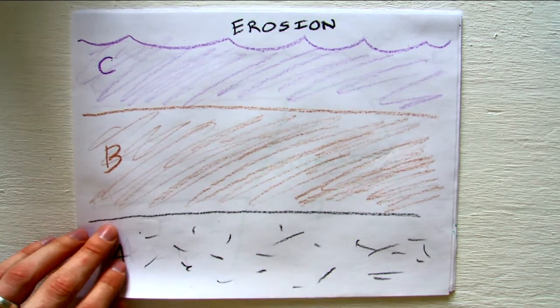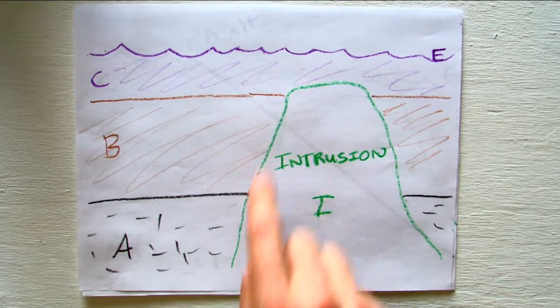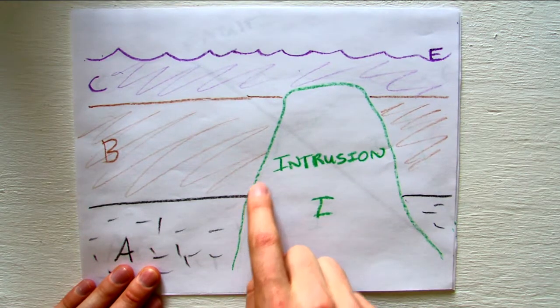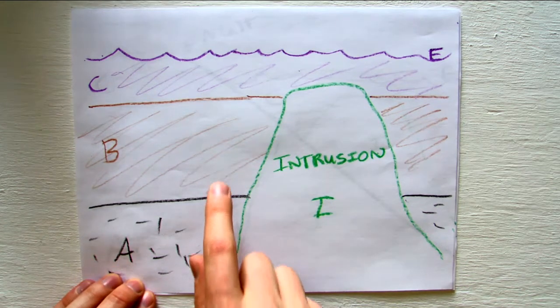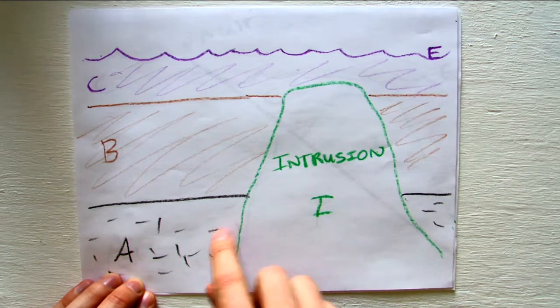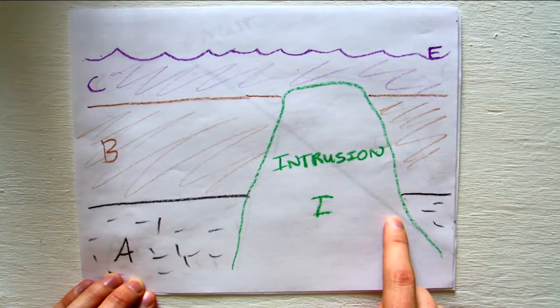Now what happens if an igneous intrusion comes in? The igneous intrusion I is cutting A, B, and C. You'll notice it is cutting off these lines. Because of that, intrusion I is younger and A, B, and C are older. The things being cut are older, and the thing doing the cutting is younger.